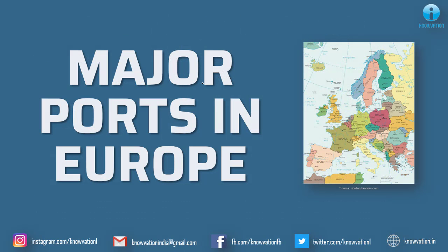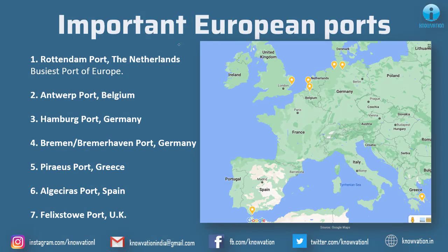Now we will see the major ports in Europe. Coming to the important European ports: the first is Rotterdam port, which is in the Netherlands — it is the busiest port of Europe, and you can see it located here. Next is Antwerp port, which is the second busiest port of Europe, located in Belgium. Then Hamburg port in Germany, and Bremen or Bremerhaven port, also in Germany.